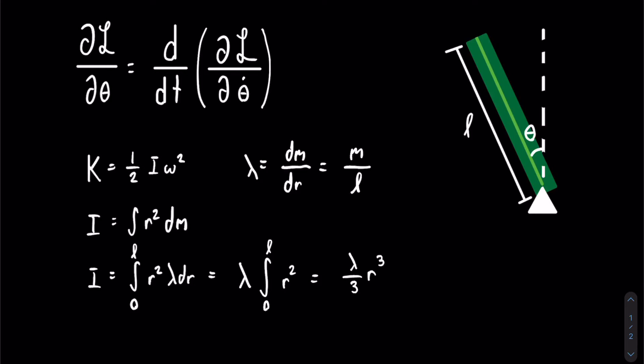After we do that, we get lambda over 3 times r cubed. And again, we're still evaluating it from 0 to L. Making those substitutions, all we're left with is lambda over 3 times L cubed.